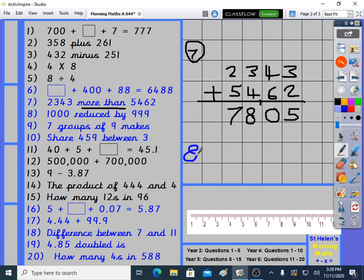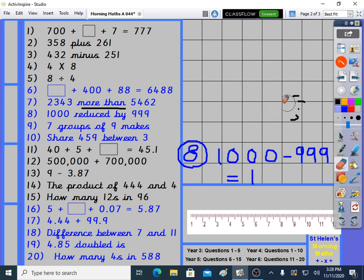Question 8: You might be able to do question 8 in your head. 1,000 reduced by, which means minus, in case you didn't know reduced because that's a new word for morning maths. We're going to do this one in our head. If you had 1,000 sweets, you gave away 999, you'll just have one left because 999 is one less than 1,000. You don't really need to do workings for that one. 1,000 take away 999 equals one. What's next? Seven groups of nine makes. Groups of is times. Seven times nine is seven groups of nine. I'll sing my sevens up to nine fingers. 7, 14, 21, 28, 35, 42, 49, 56, and 63 is the answer.